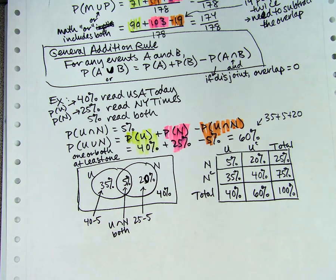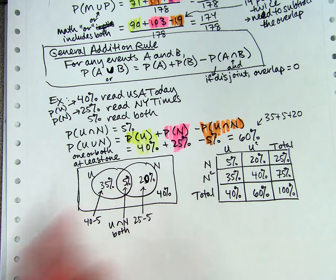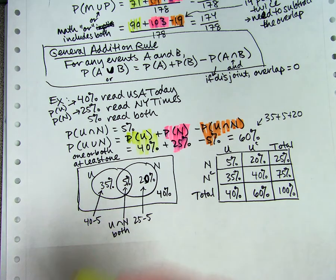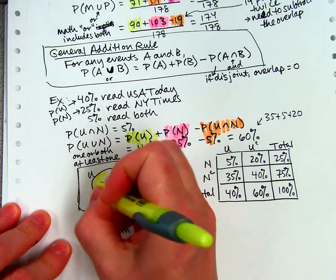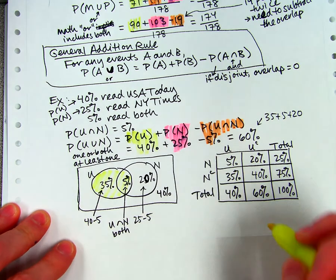So I like the Venn diagram in a way because it shows the overlap really obviously. Let's do a little bit more highlighting. Make sure you know where these numbers landed.